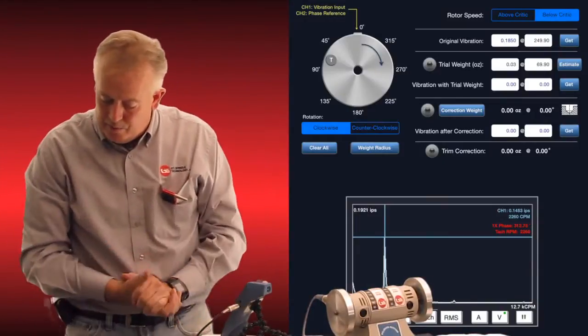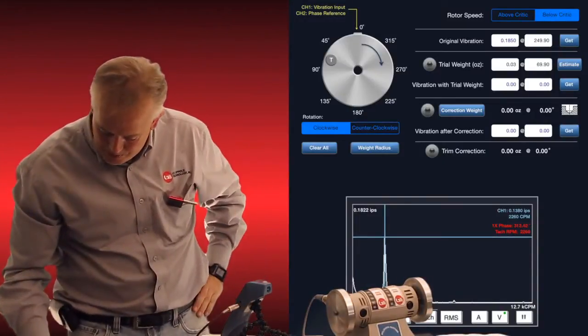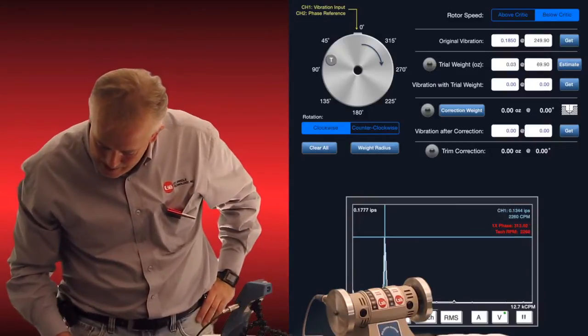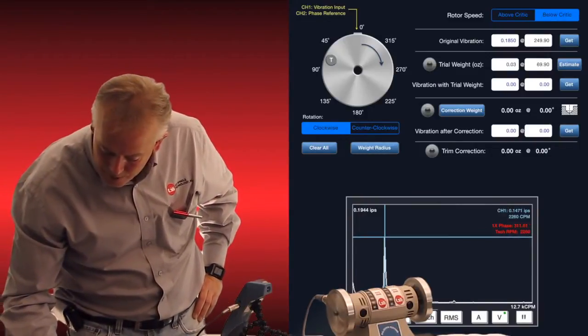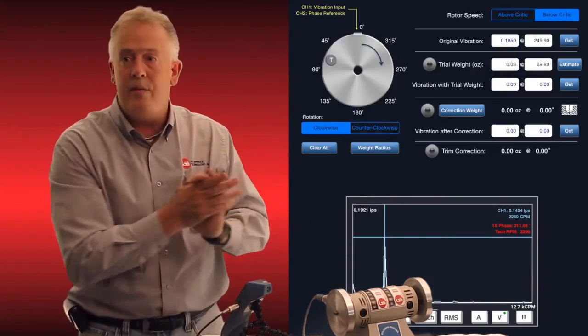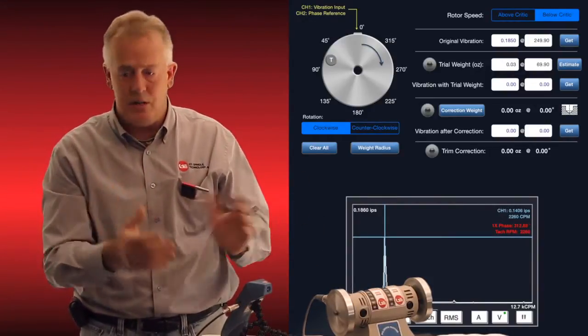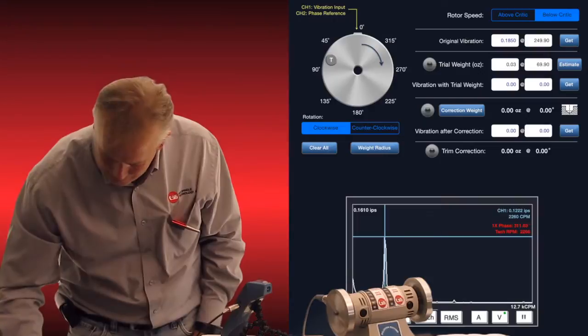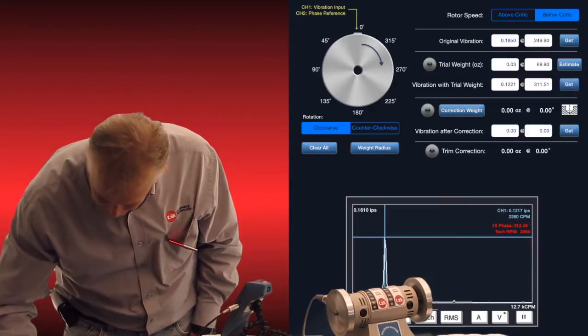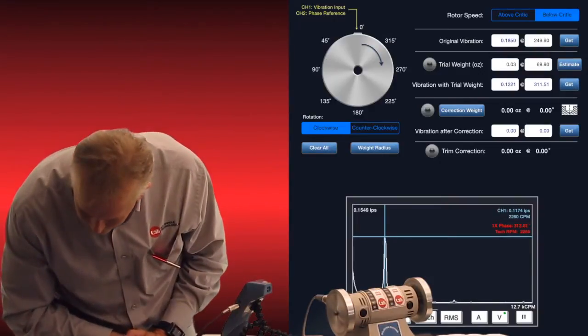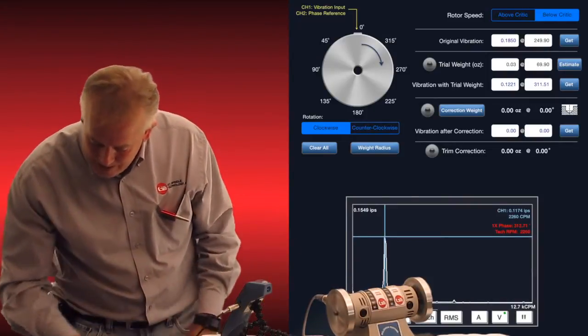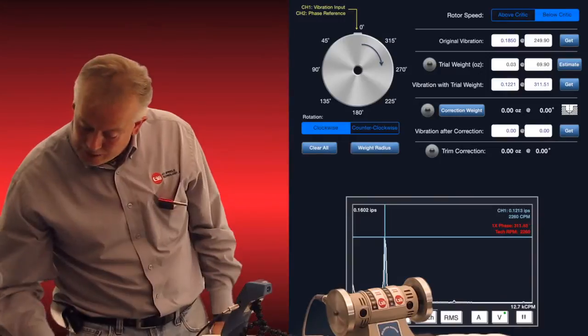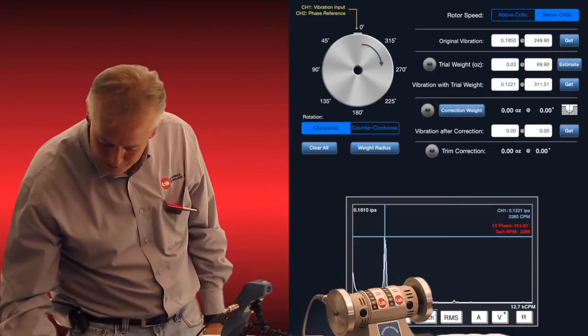And again, in the spectrum, we can make sure everything is where it's supposed to be and lining up, which it is. And the next prompt down is a get button with vibration with trial weight. So we know we've added our trial weight. So it is vibration with trial weight. We'll now tap that button. And now it's gone from 0.18 to 0.12, which is heading in the right direction. And the heavy spot is now at 311 degrees, which it's changed.